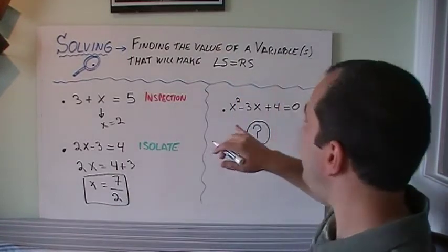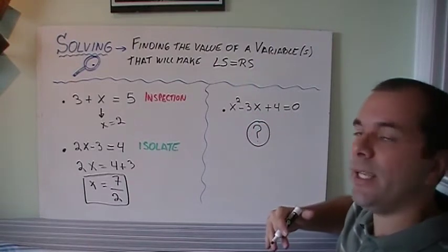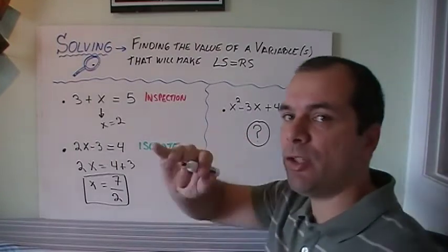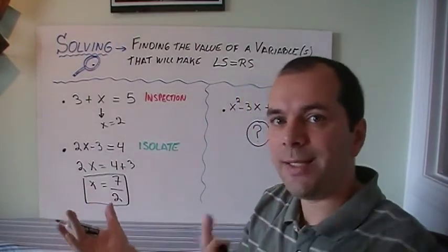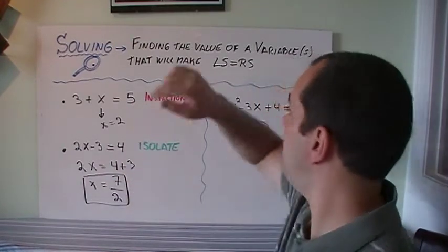But when we have something like x squared minus 3x plus 4, I cannot isolate it because I've got x squared and x that can never be put together. So no matter which one I take from this side or that side, I just can't find an answer. This is where factoring comes into place.